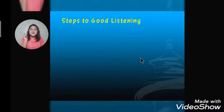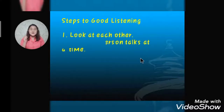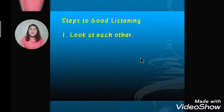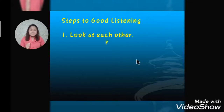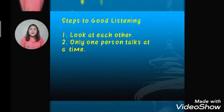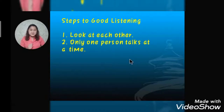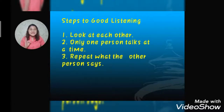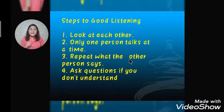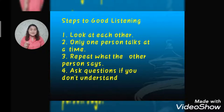Next are the steps to good listening. When communicating with other people, our friends and family, we need to look at each other when talking, so that the person knows you are listening. Number two: only one person talks at a time, because we cannot understand each other if we both talk simultaneously. Number three: repeat what the other person says. Number four: ask questions if you don't understand.